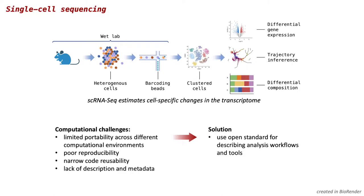I will use droplet-based single cell RNA-seq as an example. One of the biggest advantages of using a single cell approach is being able to estimate cell-specific changes in the transcriptome. By attaching barcoding bits to every cell we are able to identify cells of origin for all sequence fragments and obtain gene expression profiles for every cell.